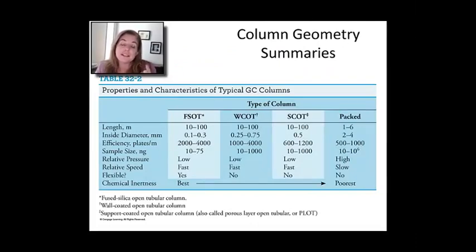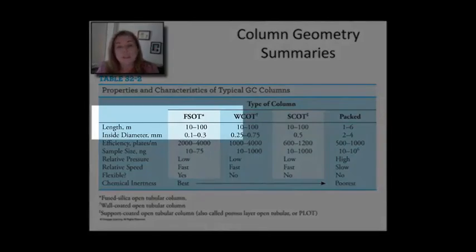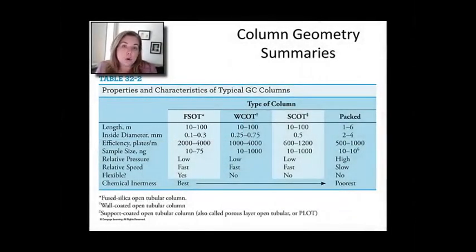Just to go over, the FSOT is going to be the thinnest of the ones we talked about. That's a fused silica open tube geometry. So as you'll notice, the inner diameters are the smallest of all of the examples given. Then you have a wall coated, and actually the porous coated open tube. And then finally for reference, a conventional packed bed. So right away, you can see that a packed bed is going to have a diameter of two to four millimeters, which is far greater than any of the open tube geometries.